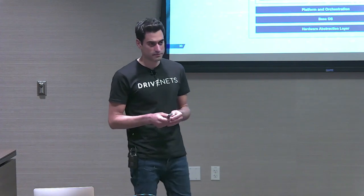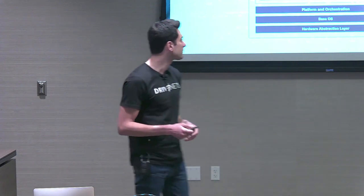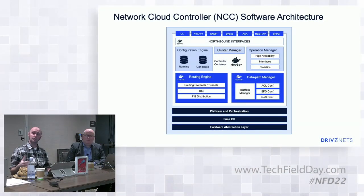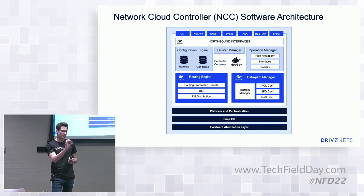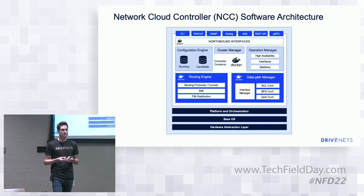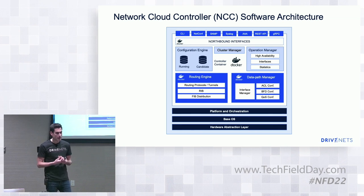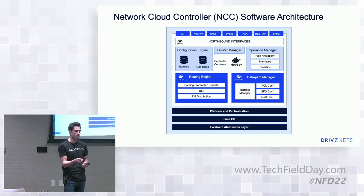Q: What are you using for Docker orchestration — Docker Swarm or something homegrown? A: Something homegrown. Think of it as a kind of swarm on each and every element individually, but not a full Kubernetes pod or Docker Swarm across the entire cluster. The reason is scalability and failure reaction time — in routers you want to react to failures in under 50 milliseconds. When a Docker container fails, our internal orchestration mechanism takes charge and brings it back up.